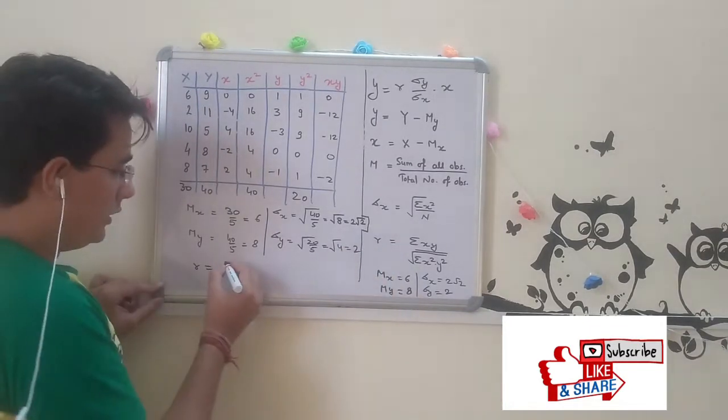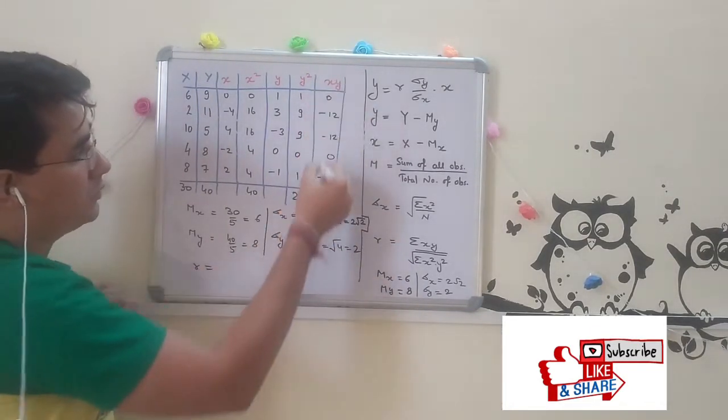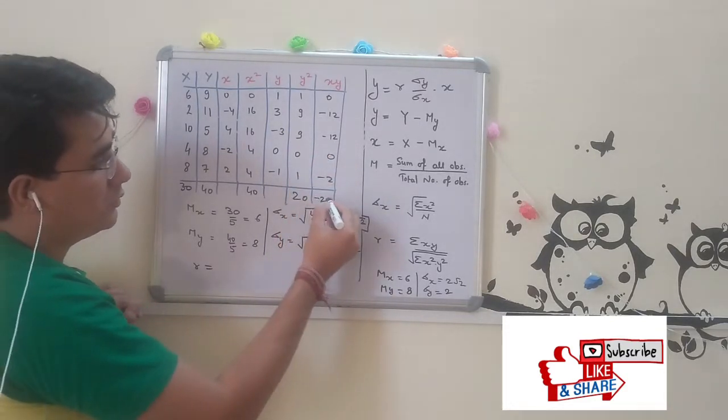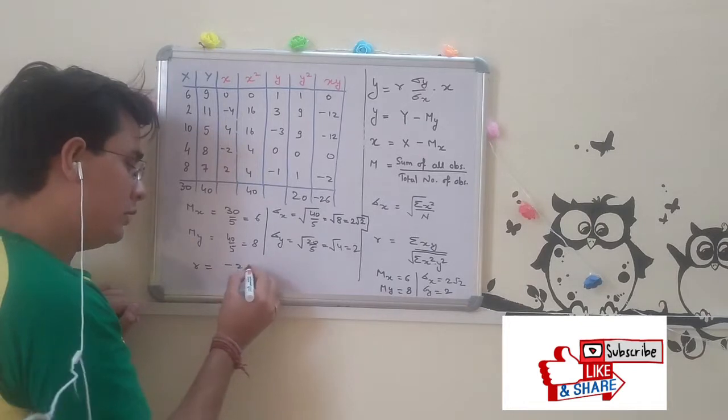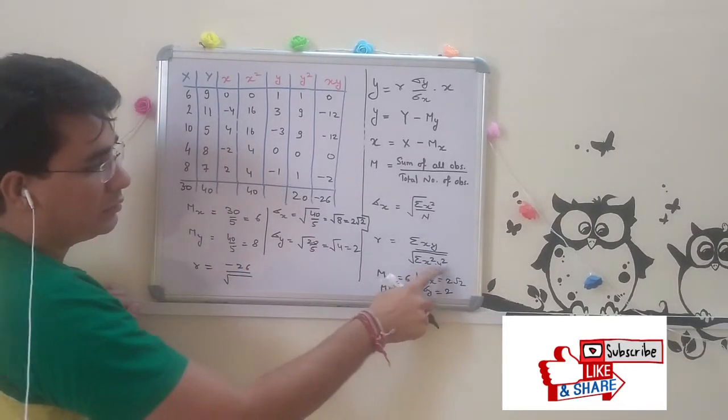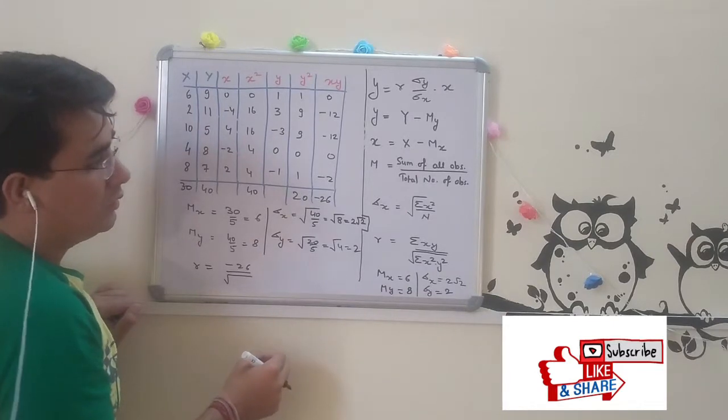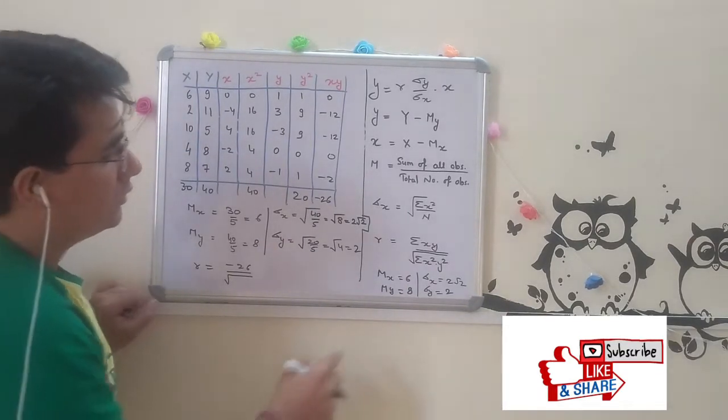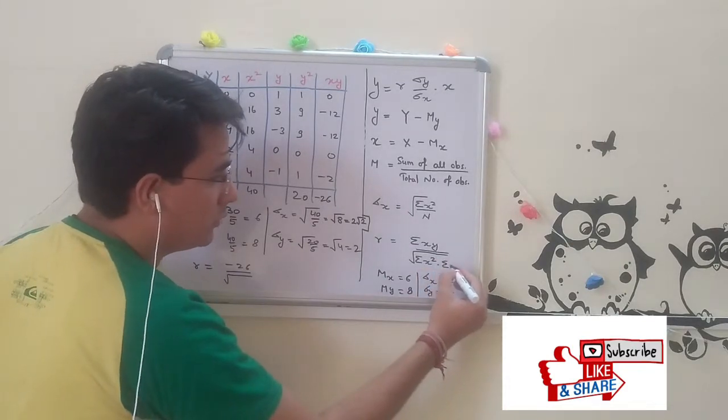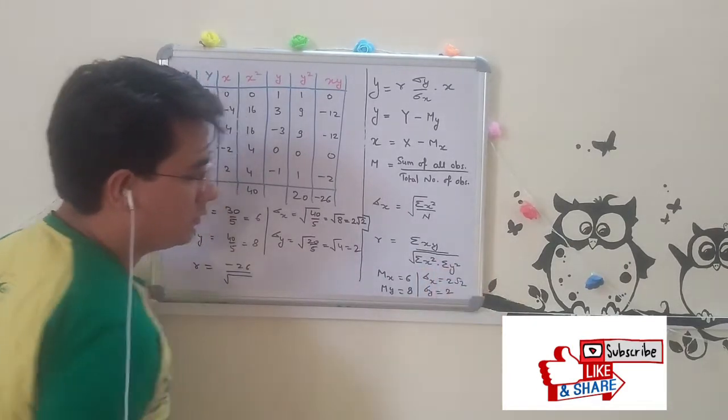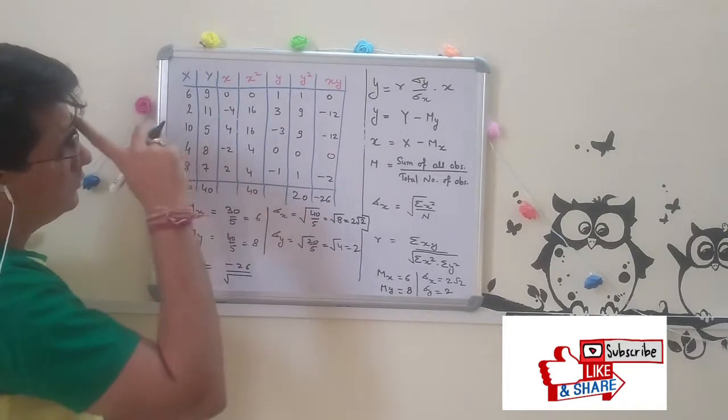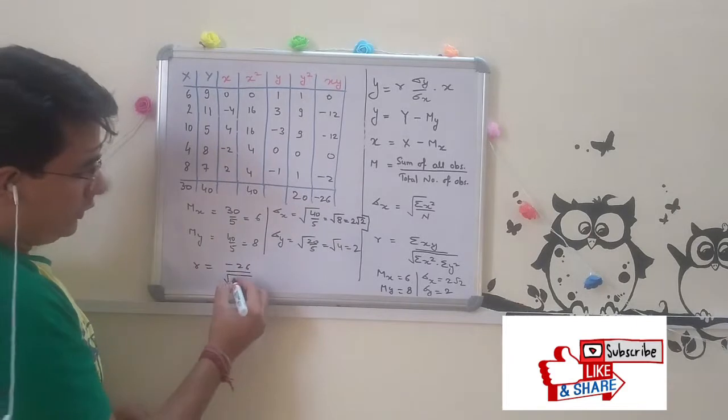Now moving ahead with R. Sigma xy, this minus 26, over sigma x squared times sigma y squared.